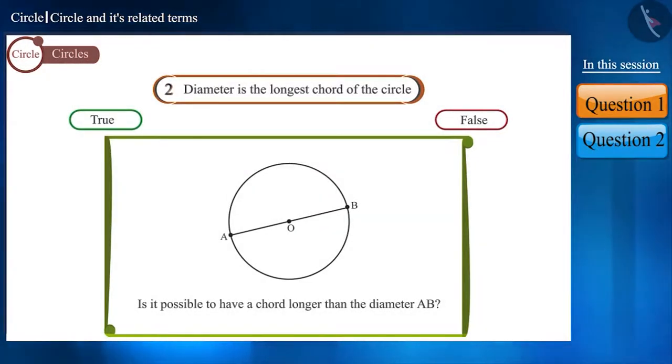You will see that in the circle, if we draw more chords parallel to this diameter, then the chords closer to the center are longer than the chords located away from the center. And the diameter, which is the chord that passes through the center, is the longest chord of the circle.